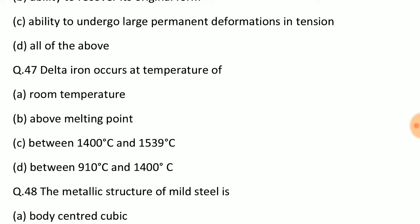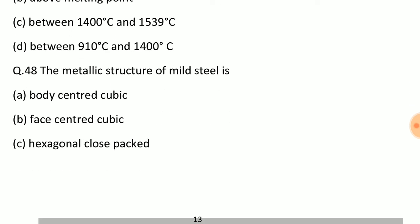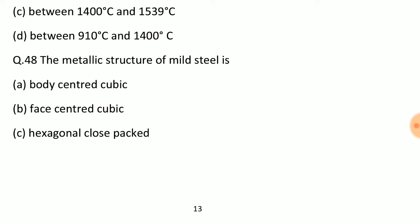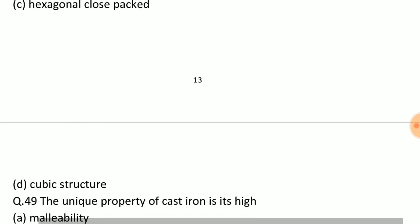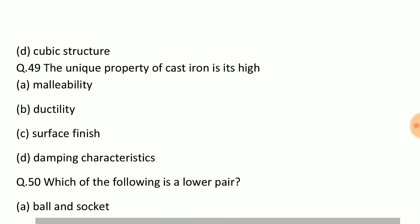Question: Delta iron occurs at temperature of? Answer: Option C, between 1400 degrees Celsius and 1539 degrees Celsius. Question: The metallic structure of mild steel is? Answer: Option A, body centered cubic. Question: The unique property of cast iron is its high? Answer: Option D, damping characteristics.